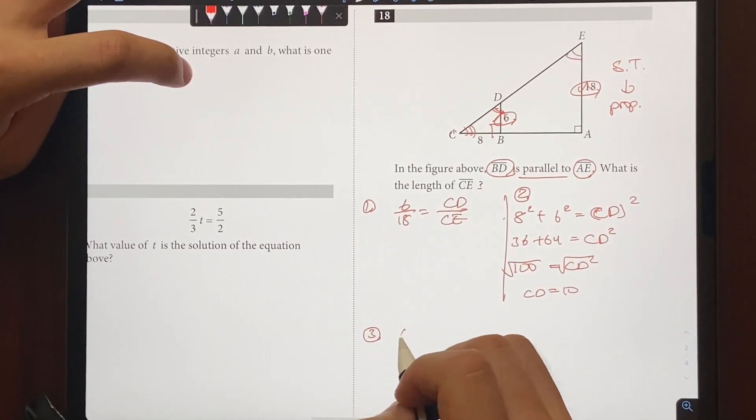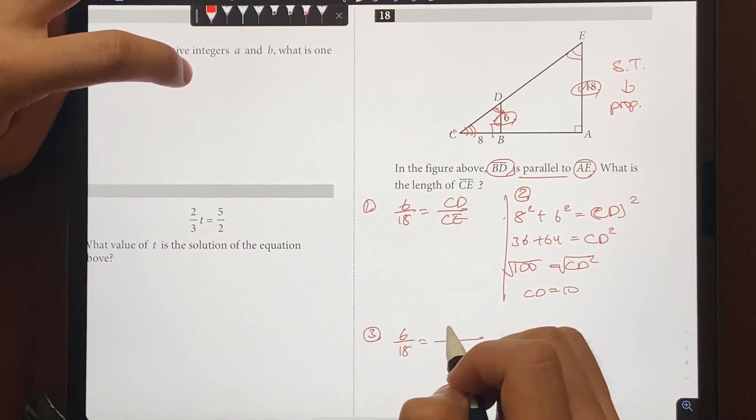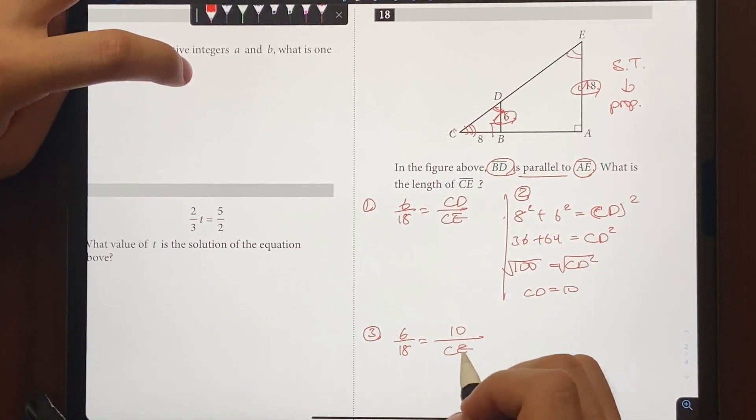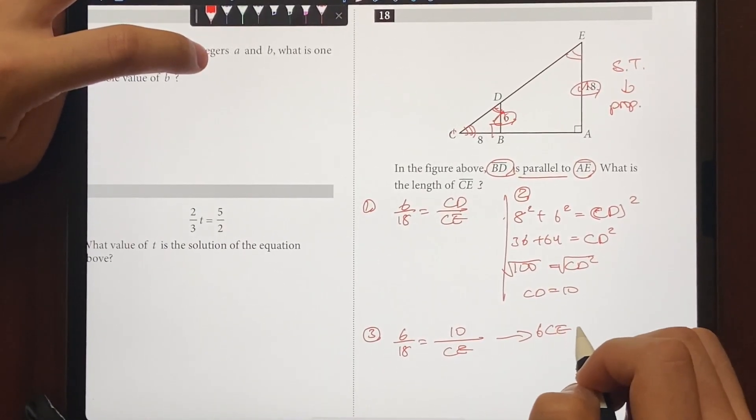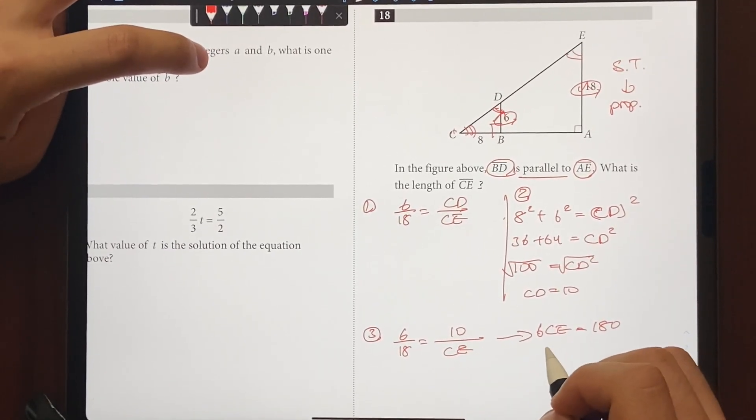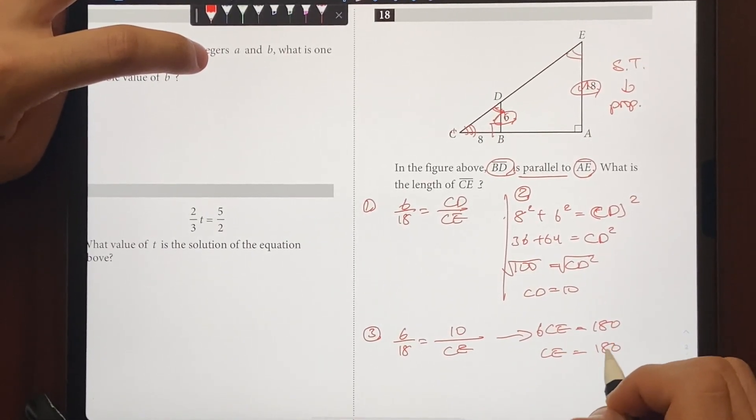And now we can use this information to find out what CE is, which is going to be the last step. So 6 over 18 is equal to CD, which is going to be 10 over CE. And that's the only unknown variable, so cross multiply. So 6CE is going to be equal to 10 times 18, which is 180.